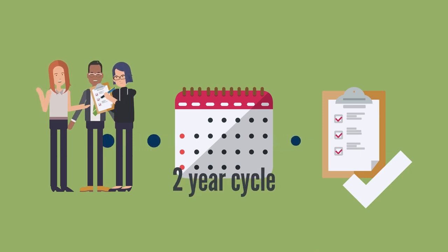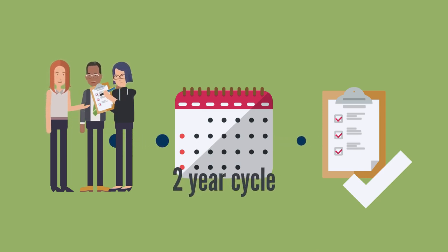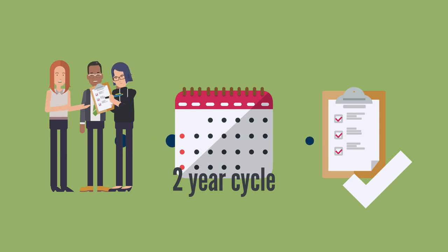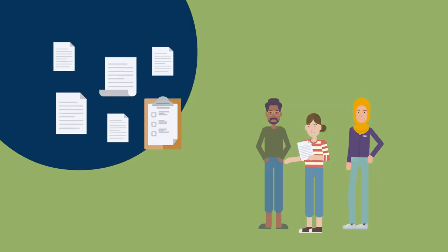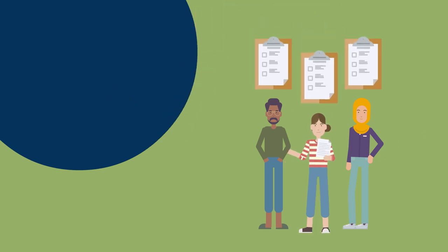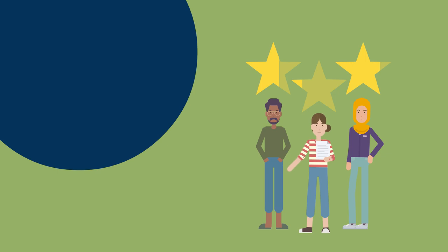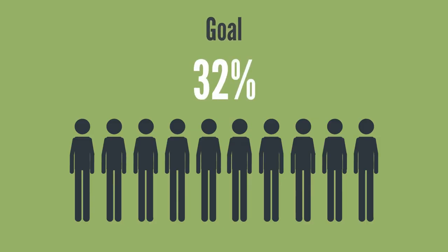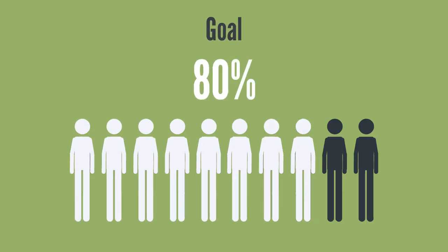In a two-year cycle, we assess if and how well students acquire the promised competencies. We take a representative sample of courses and assess the skills students show in their exams. It is our goal that at least 80% of the students in the sample meet or exceed our expectations.